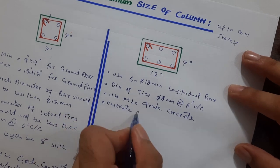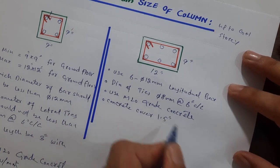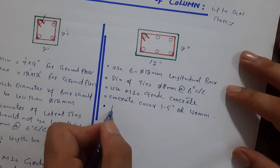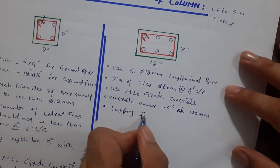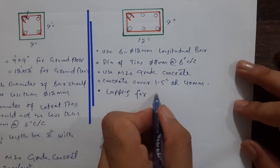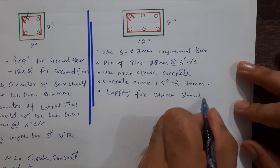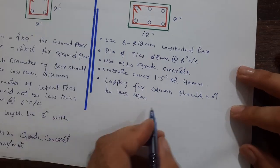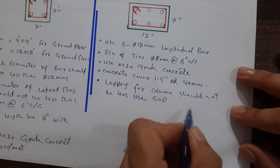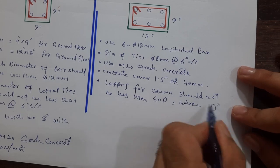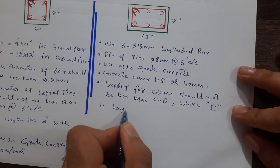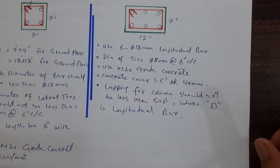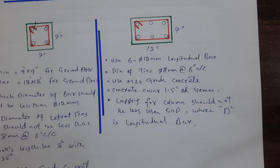Concrete cover should be 1.5 inches or 40 millimeter. Lapping length, especially for columns, should not be less than 50d, where d is the diameter of the longitudinal bar.